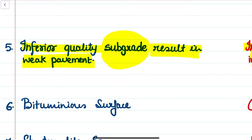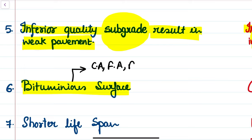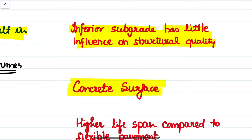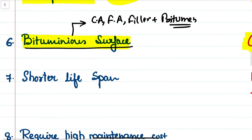The sixth difference is that the top surface of flexible pavement is a bituminous surface — a combination of coarse aggregate, fine aggregate, filler material if required, and bitumen as binder, mixed in specific proportions. The top surface of rigid pavement, on the other hand, is a concrete surface formed by a combination of coarse aggregate, fine aggregate, cement, sand, and admixture if required — known as pavement quality concrete.